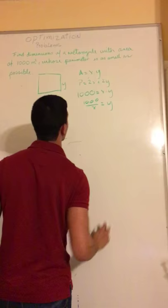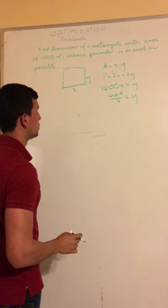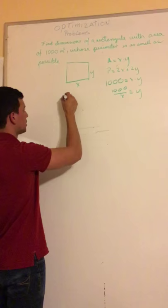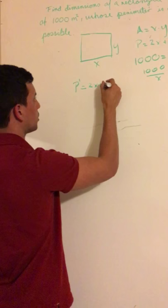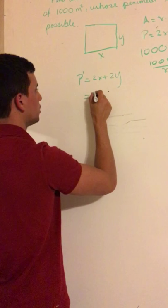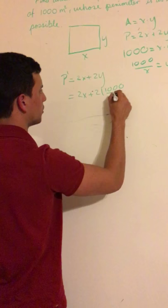The formula that we are trying to differentiate to find the minimum value is the perimeter. Perimeter is equal to 2x plus 2y and we are plugging this in now. So it will be 2x plus 2 that multiplies 1000 over x. That way we have just one variable.